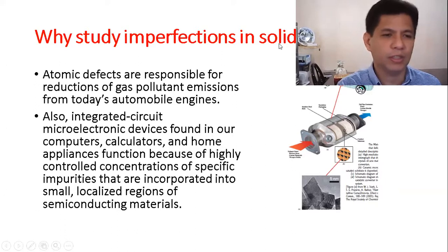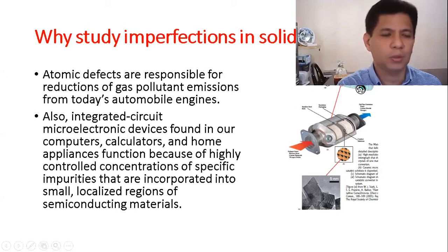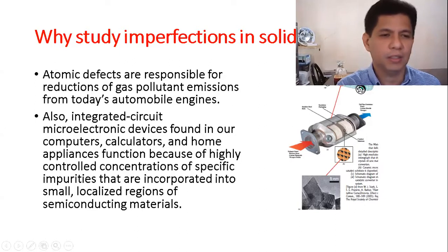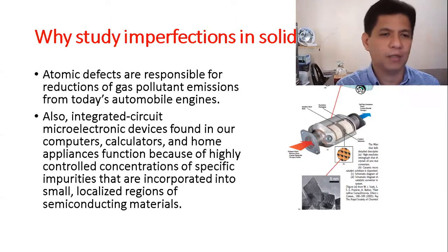Aside from this, integrated circuit microelectronic devices found in our computers, calculators, and home appliances function because of highly controlled concentrations of specific impurities that are incorporated into small localized regions of semiconductor materials. This particular imperfection is known as vacancies, which is responsible for the semiconductor property of these materials. We're also going to see the effect of imperfection on the strength of the material. Generally, imperfection increases the strength of the material.